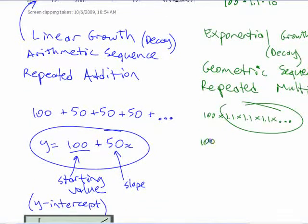What's the shorthand way for doing that? This you can write as, all those 1.1s you can write as, to the power of x, times 1.1 to the power of x.